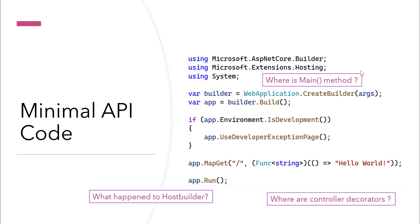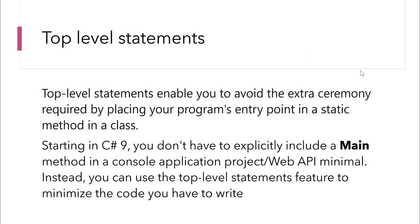C# 9, which was introduced recently, has got a lot of new features, and C# 10 is coming up pretty soon as well. The missing main method is because of something called top-level statements in C# 9, which helps you avoid the extra ceremony of placing your program's entry point in a static method in a class — like the usual public static void Main(string[] args). With C# 9, you don't have to explicitly include a main method in a console application or a minimal Web API project.